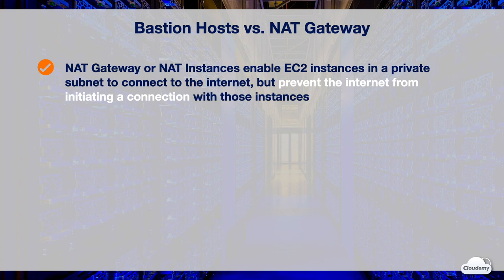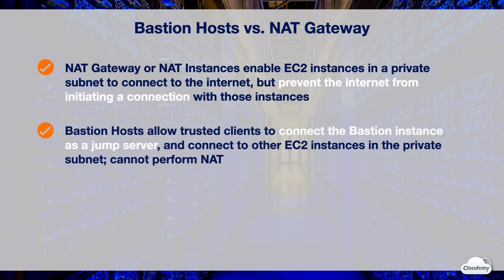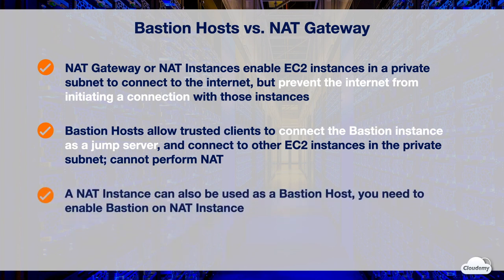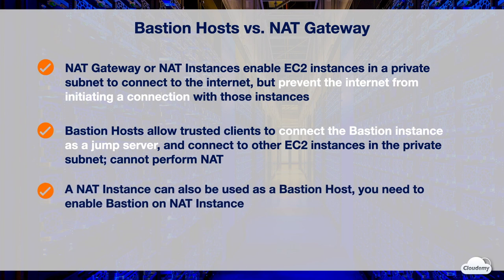NAT is suited for internal-facing application servers and database instances in private subnets where they need to securely connect to the internet for OS updates and patches. Bastion hosts, on the other hand, allow trusted clients to connect to the bastion instance as a jump server and connect to other EC2 instances. Bastion hosts can be used when you need to securely access private instances to perform administrative tasks.